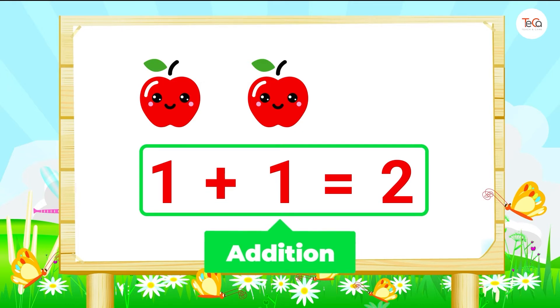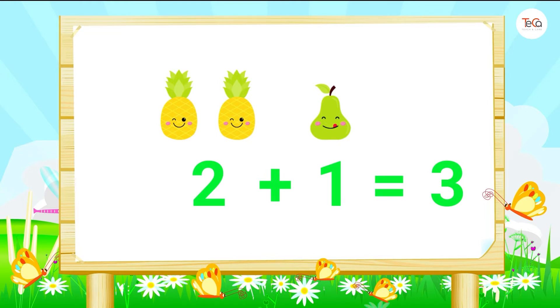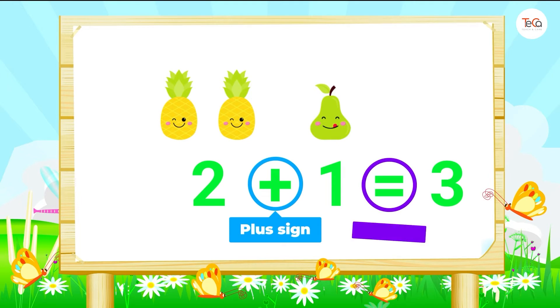Notice here this is the plus sign and this is the equal sign. Let's take another example. Suppose you have two pineapples and one pear. Now you have three fruits in total. Here we add two and one to get three. We say two plus one equals three.